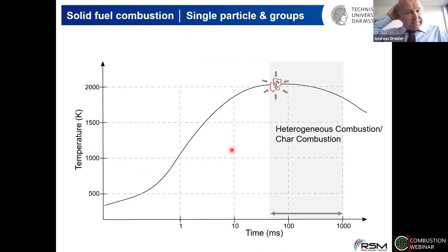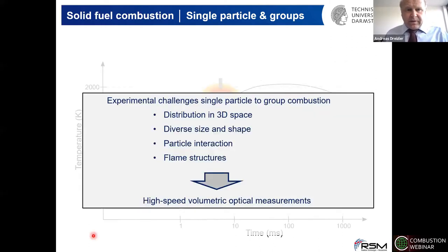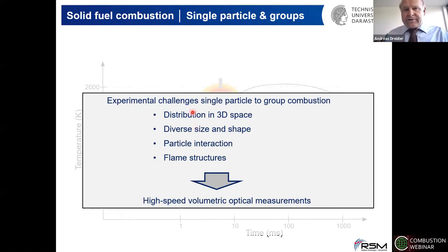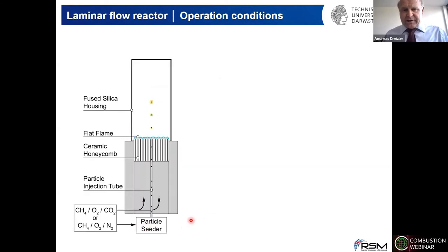After volatile combustion, the particle may switch to char combustion, which is heterogeneous in nature, and after C atoms are consumed, you end with ash. We are looking at the early phase up to the volatile combustion to better understand how the flame structure changes going from a single particle to group combustion. This is a 3D problem with diverse particle sizes and shapes, particle-particle interactions, and different flame structures. We have developed high-speed imaging extended to volumetric imaging and apply these to this challenging combustion phenomenon.